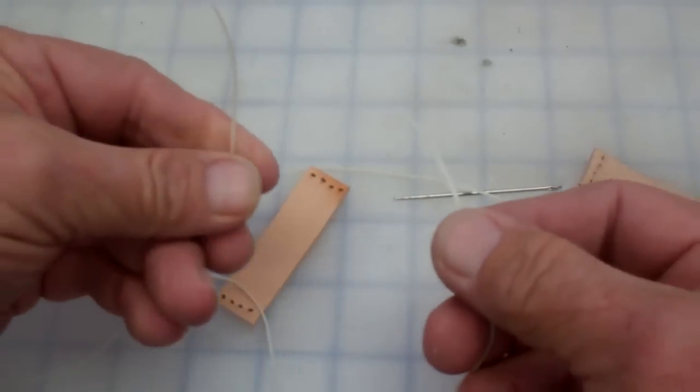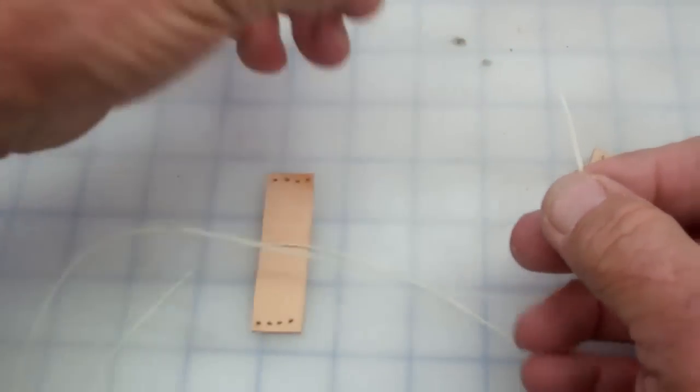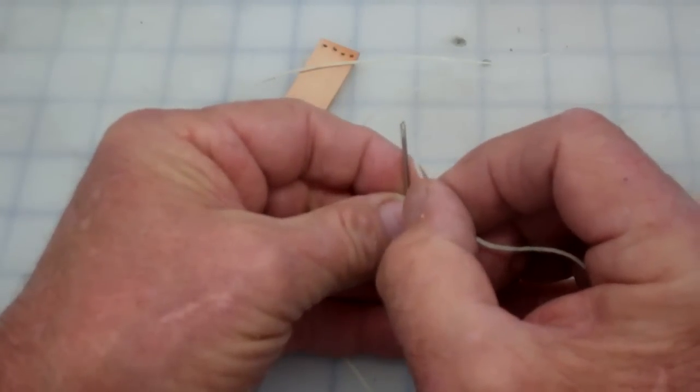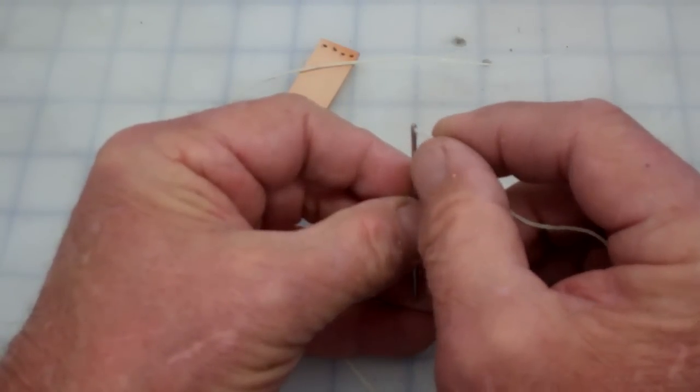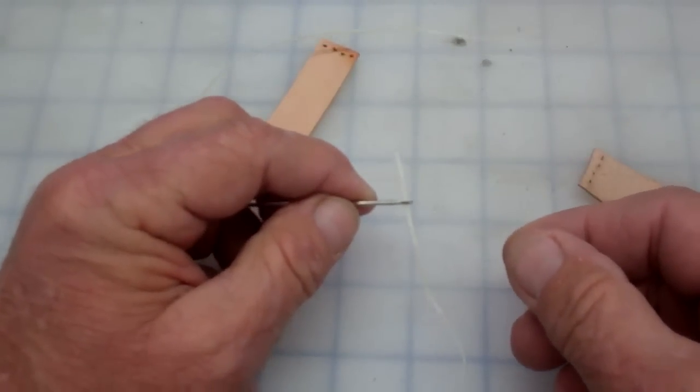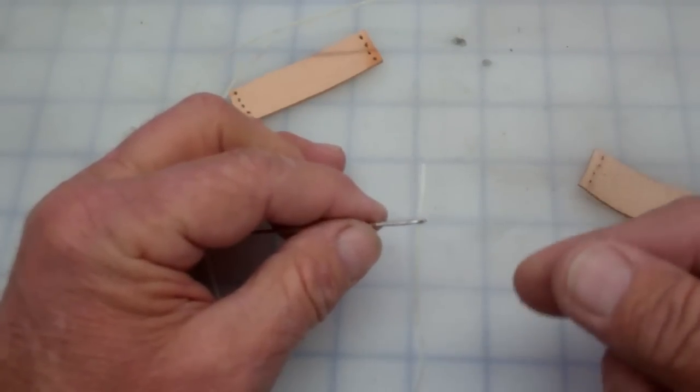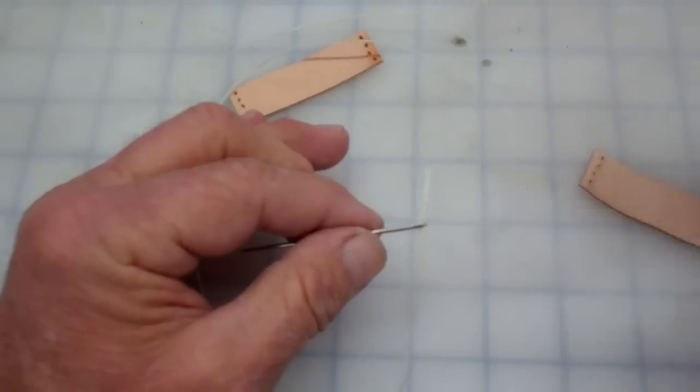I cut off maybe 12 inches of wax thread. I have my needles. Normally I won't lock my thread on a needle if I'm only sewing belt keepers, but I will show you how to do it if you don't know.